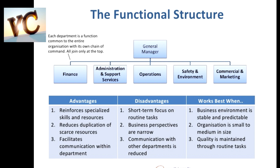Third is departmental attitude — har department sochta hai ki unke hisaab se kaam ho, they are the head. Agar woh kaam nahi karega toh doosra department nahi chalega — but aisa nahi hai, har ek department apne level pe important hai, agar ek department nahi hai toh poori company fail ho jaayegi. Fourth is difficult to fix accountability — A kaam nahi karega toh B nahi hoga, B nahi hoga toh C nahi hoga; toh A ko poori fault ke liye blame nahi kar sakte. It becomes difficult to make any one department accountable for the fault.